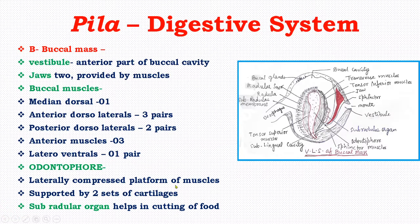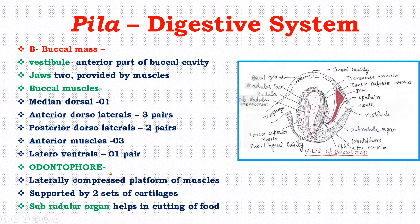The odontophore forms a subradular organ on the anterior side, which forms a roof over a narrow space called the sublingual cavity. This subradular organ helps in cutting of the food. The odontophore is provided with well-developed muscles which surround and support it.